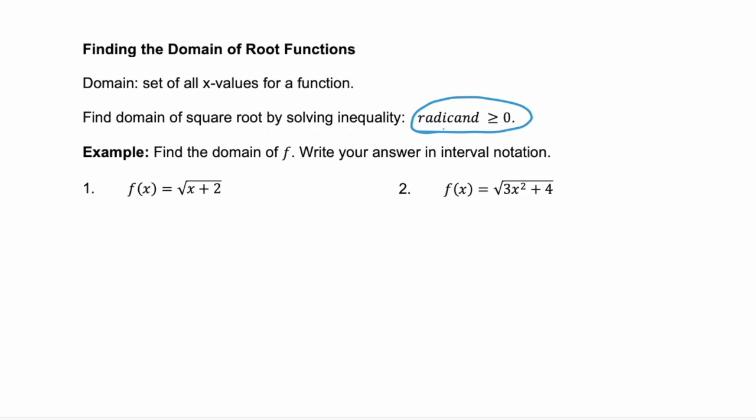For these examples, it says find the domain of f and write your answer in interval notation. Example 1, f of x equals the square root of x plus 2. Our radicand here is x plus 2. So we're solving x plus 2 is greater than or equal to 0. So now we just isolate x. Subtract 2 from both sides. And we know that x is greater than or equal to negative 2.